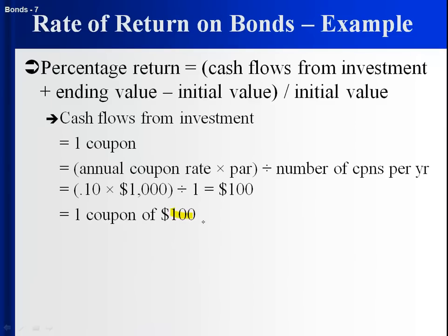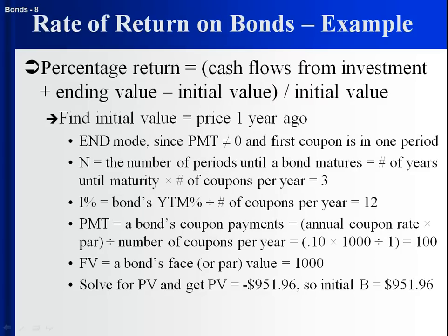The coupon is $100 — one coupon, 10% of $1,000. For the initial price one year ago: N equals 3 years to maturity, I equals 12% yield to maturity, PMT equals $100 coupons, FV equals $1,000, in end mode with the next payment in one year. The value of the bond one year ago was $951.96. That is our initial value.